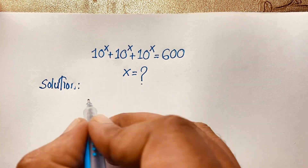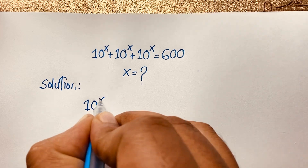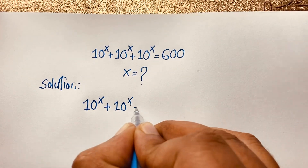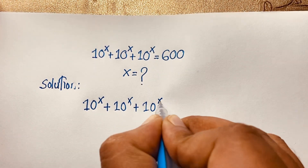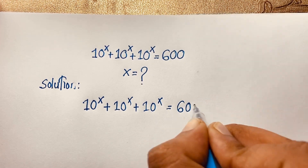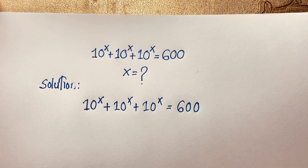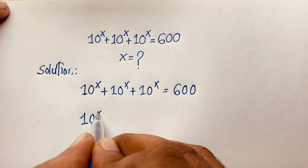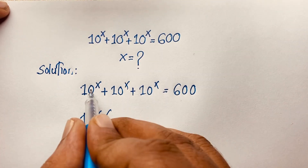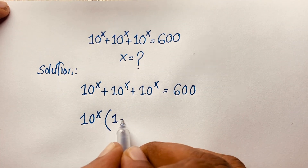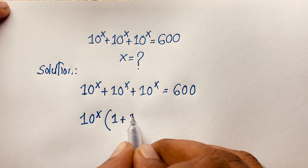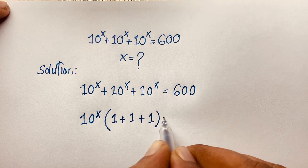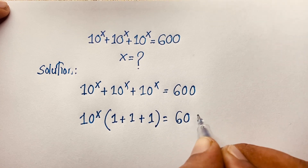Here is 10 to the power x plus 10 to the power x plus 10 to the power x is equal to 600. I can see easily that 10 to the power x is common. So, factoring it out: 10 to the power x times (1 plus 1 plus 1) is equal to 600.